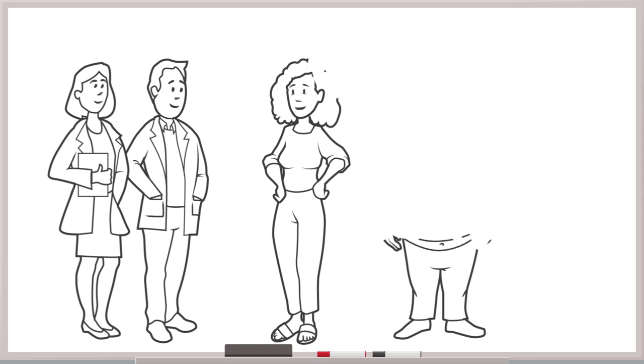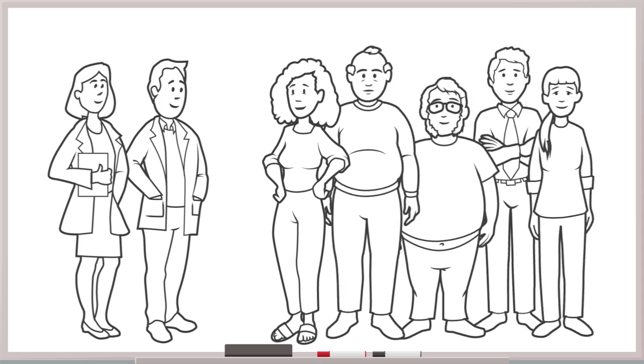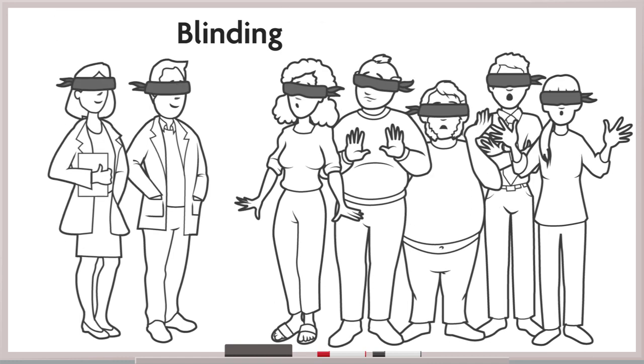So how can you mitigate the danger of this kind of bias? One critical method is essentially the same one you used in your wine taste test: blinding, the process by which people involved in research—the participants, the investigators, or both—are kept unaware of treatment group assignments.